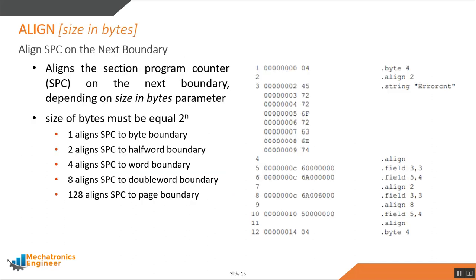The ALIGN directive is used to align the section program counter on the next boundary. By default, it aligns the current location to a word boundary. ALIGN 2 can also be used to align on a half-word boundary in Thumb code. Generally, it is safer to use ALIGN frequently throughout your code. The size-in-bytes parameter must equal 2 raised to the power of n — so ALIGN 2 aligns to a half-word boundary, and ALIGN 4 aligns to a word boundary, and so on.